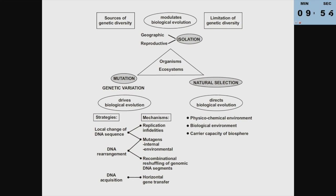Charles Darwin and others worked with the concept of isolation, and in higher organisms not any living being can reproduce with any other — this is reproductive isolation, and that modulates the process of evolution.